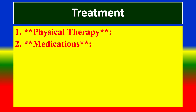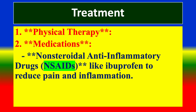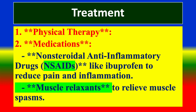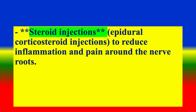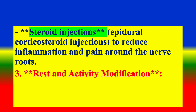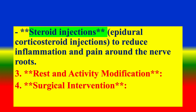Treatment options include physical therapy, medications such as non-steroidal anti-inflammatory drugs like ibuprofen for reducing pain and inflammation, muscle relaxants to relieve muscle spasms, steroid injections to reduce inflammation and pain around the nerve roots, rest and activity modification, and surgical intervention when necessary.